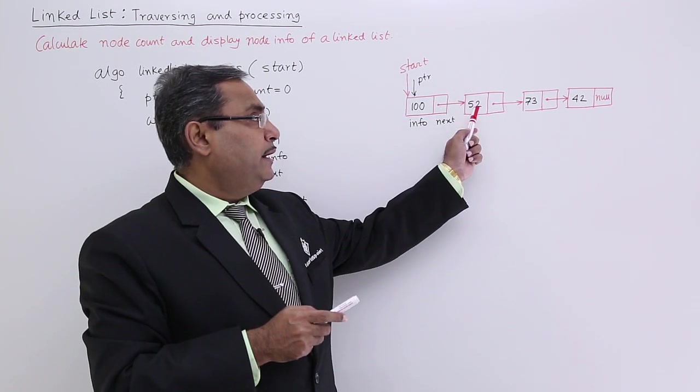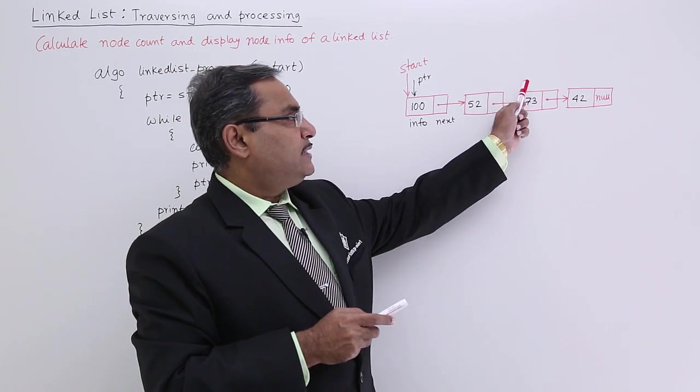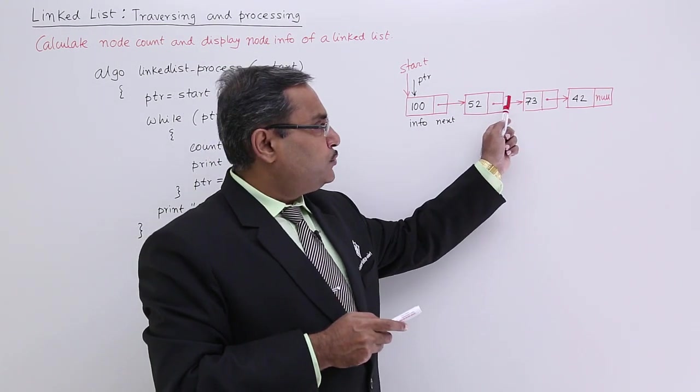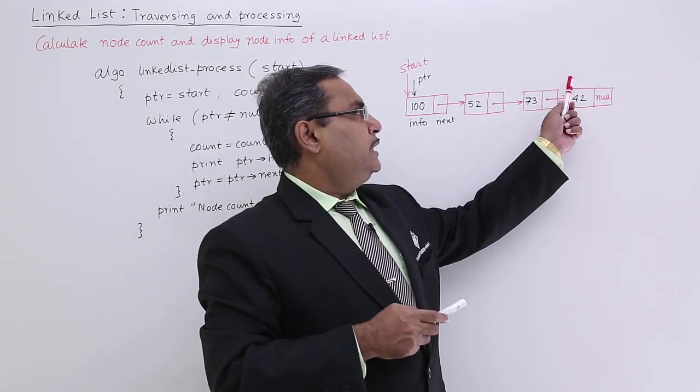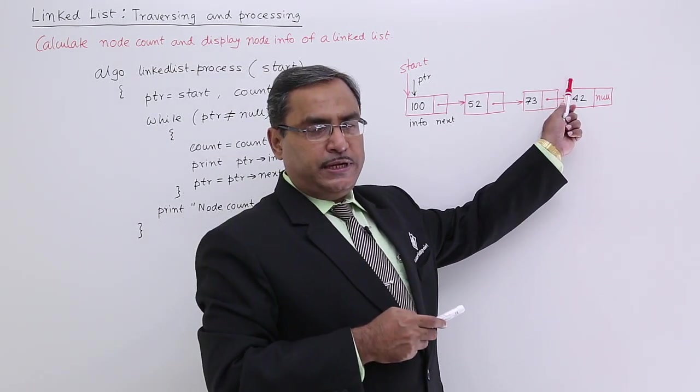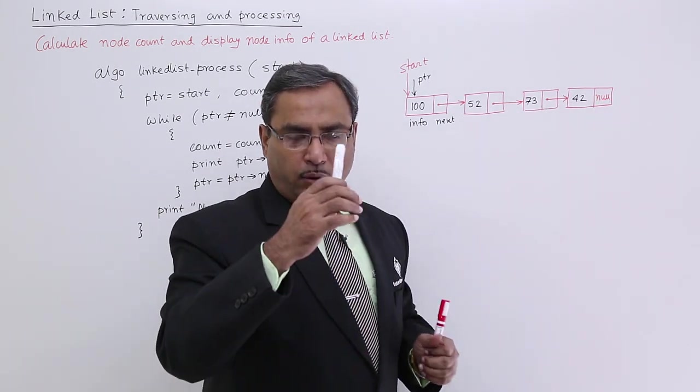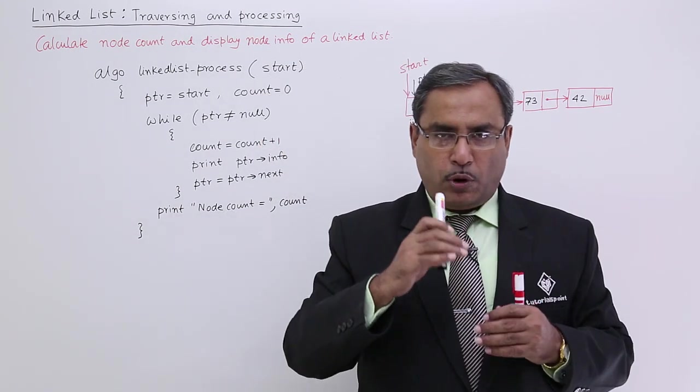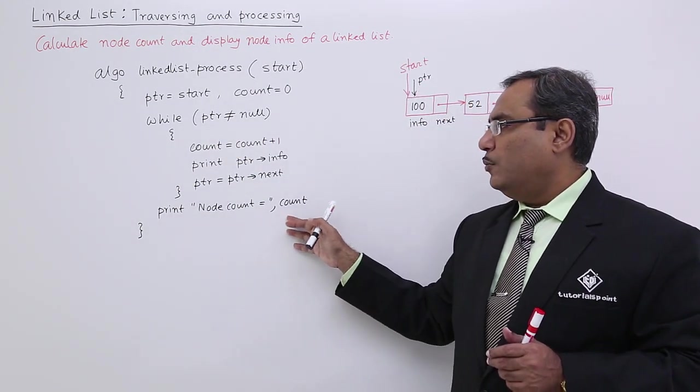It will be pointing to the next node. Now PTR will print this info and PTR is equal to PTR next will be going to the next node's address. In this way the PTR will have the advancement. Now PTR is equal to PTR next, PTR implies next will get initialized with null and then the while body will get terminated.